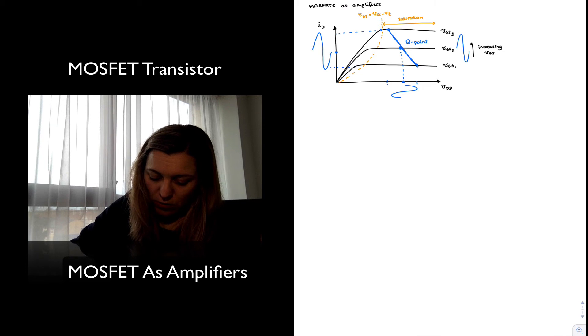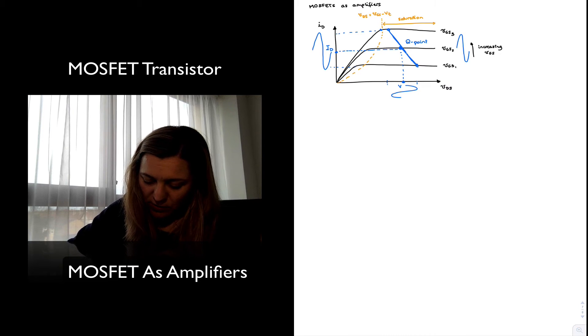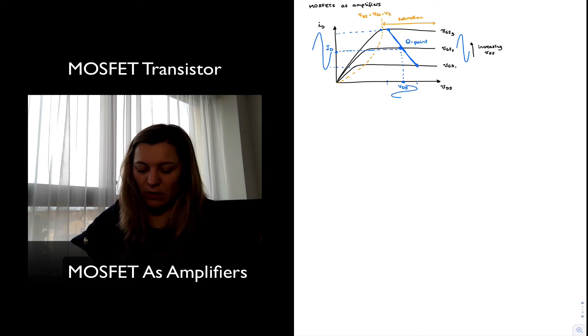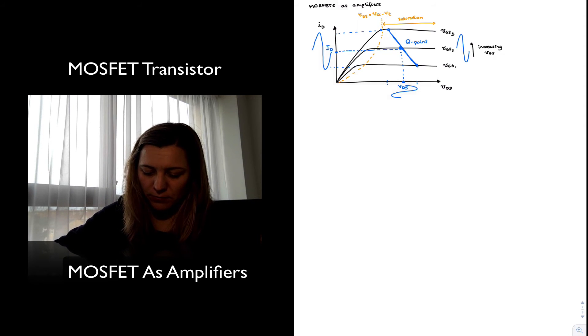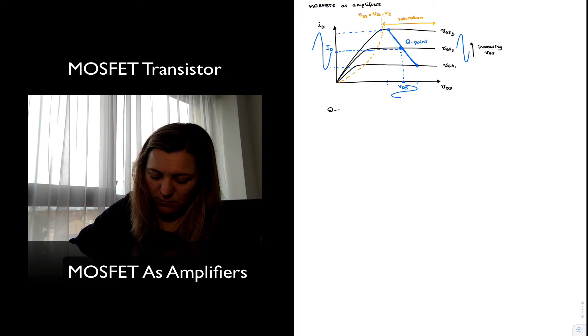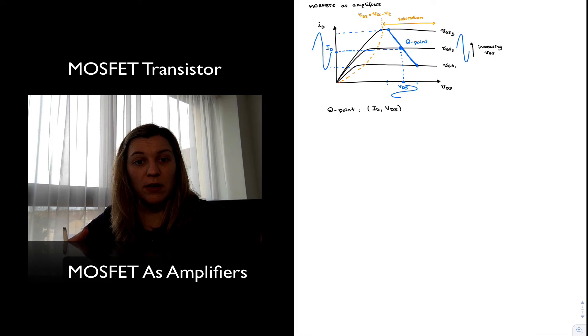Now, the location of that Q point, I refer to that as capital ID and capital VDS. Those points are defined in the location of my Q point in this graph. And notice that I am representing them as capital letter quantities with capital subscripts. And that means that they are DC quantities, because when I'm doing biasing, I'm doing the DC biasing, I'm setting the DC values about which I'm going to be applying varying signals.